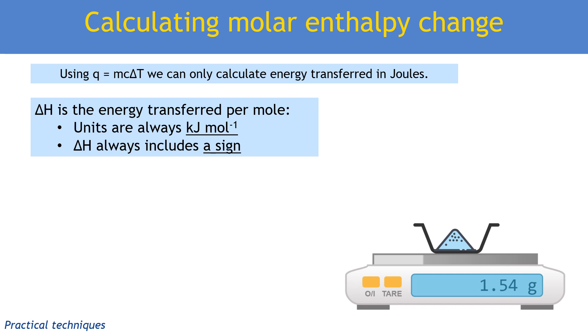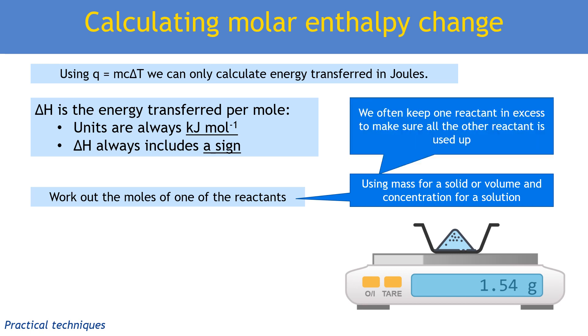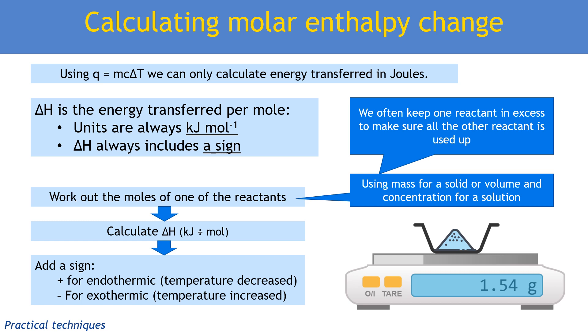To convert from energy transferred in joules into kilojoules per mole, we need to turn our energy from joules into kilojoules by dividing by a thousand. We also need to work out the number of moles in one of the reactants used, using the mass if it's a solid or volume and concentration of a solution. We normally have more than one reactant, with the other in excess to ensure complete reaction. Once we've calculated kilojoules per mole by dividing kilojoules by moles, we add a positive sign for endothermic or negative for exothermic, decided by whether temperature decreased or increased.